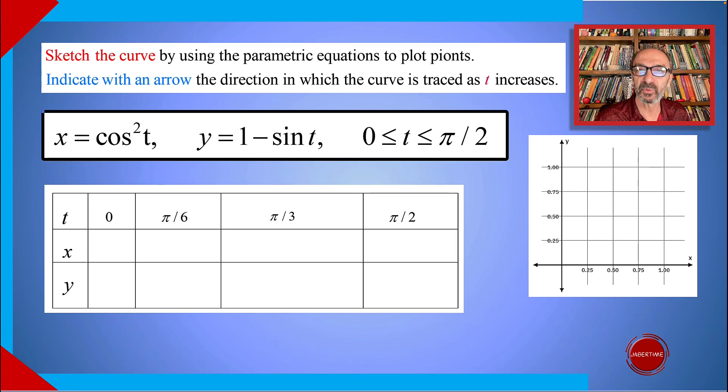Sketch the curve by using the parametric equations to plot the points. Indicate with an arrow the direction in which the curve is traced as t increases, where t goes from zero to π over 2.